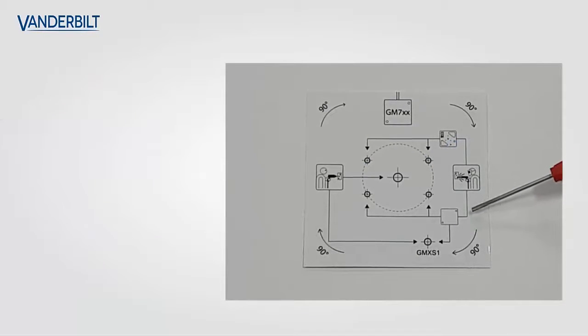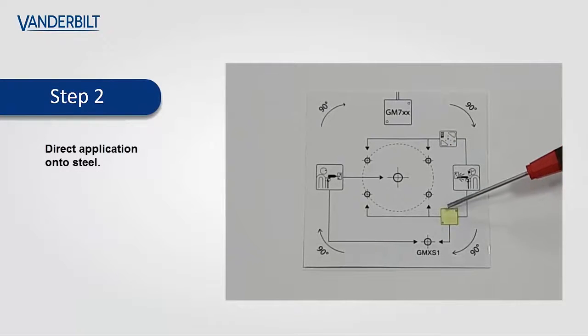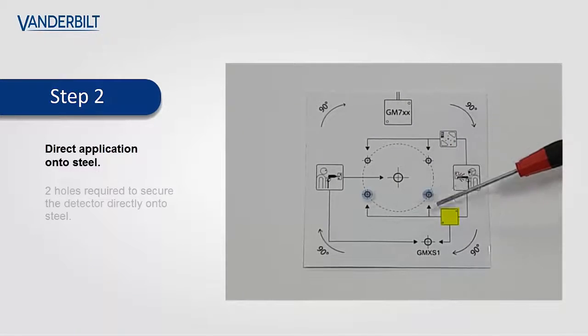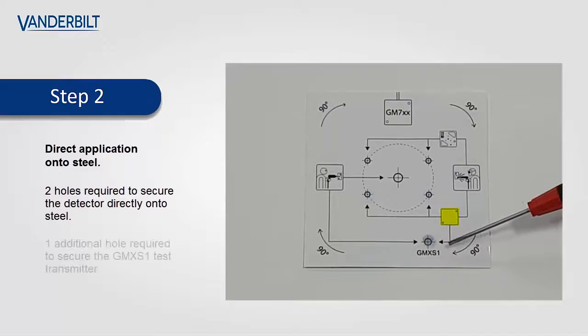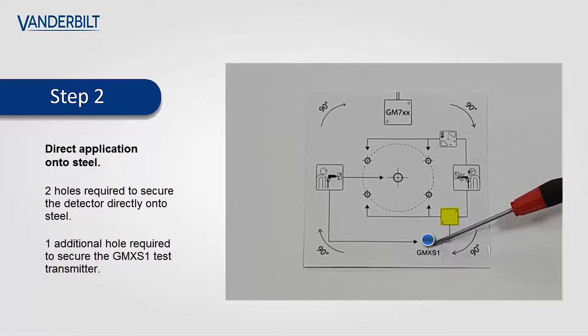For direct application onto steel, these are the two holes that are required. Once these are drilled, the detector will be secured directly onto steel, and the third hole is for the GMX-S1 which is indicated here.